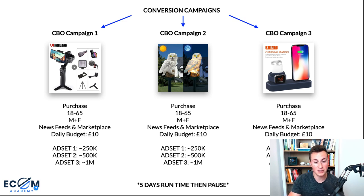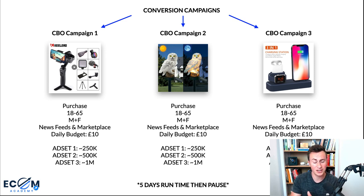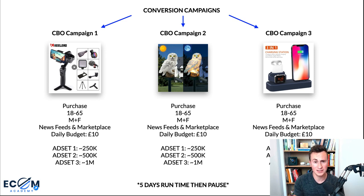First of all, we're going to be starting with three different conversion campaigns. The amount of campaigns you run is completely relative to how many products you want to test. As a rough rule of thumb, I suggest a minimum of three products — if you want to test four or five products that's fine. Just make sure you have one product per campaign. Each campaign is going to be a CBO campaign, because we're going to let Facebook choose and decide which ad set is the best. The main differentiating factor between ad sets is going to be the audience size.